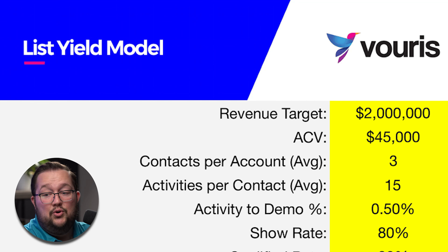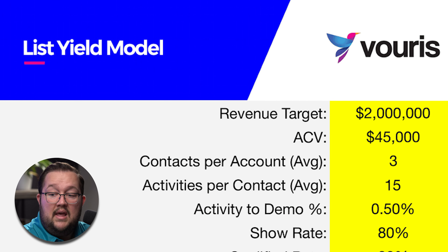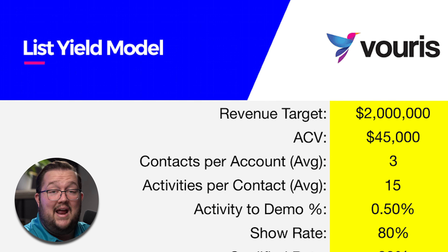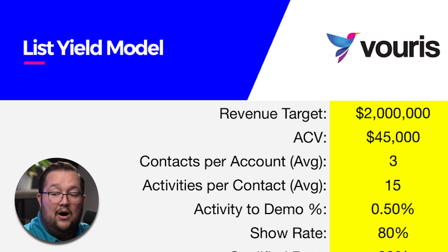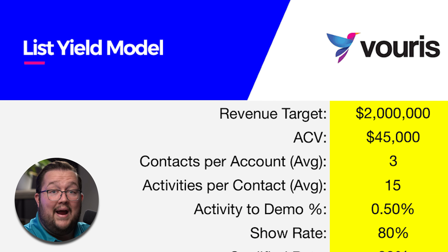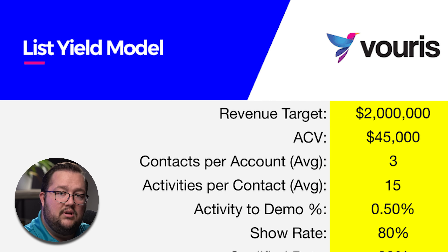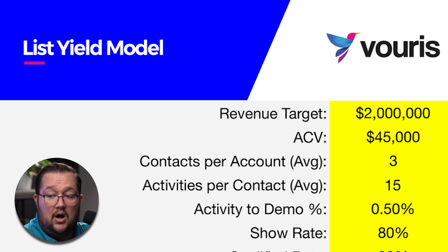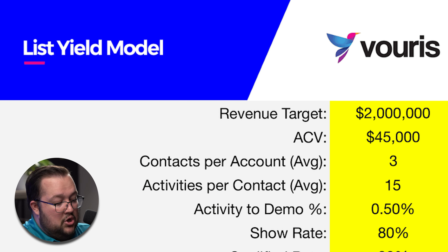This is the List Yield Model. What we're going to do here is figure out exactly how many companies and how many contacts we need to support the outreach that we are trying to do. And that outreach is going to be calculated based on the revenue target we are setting for that team.